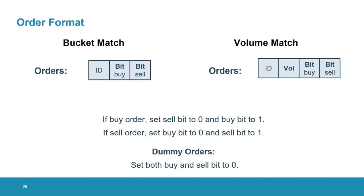We can also have dummy orders, in which case both the buy bit and the sell bit will be zero. For the volume match, we again have a buy bit and a sell bit indicating the direction of the order, but now we also have information about the volume. As mentioned, we need this volume to be below a certain bound, and to enforce this, we require the volume to be written as a sequence of bits, so this volume information will consist not of a single value but of a sequence of bit values.